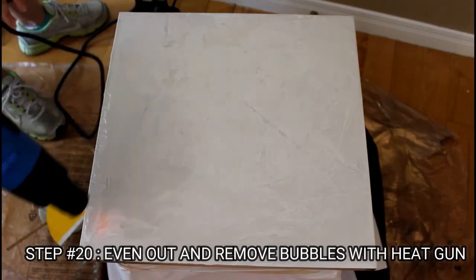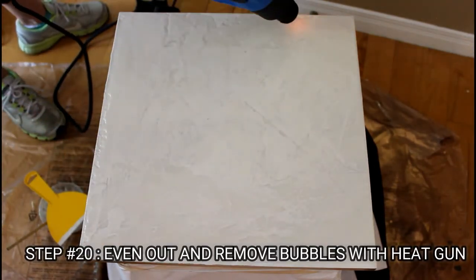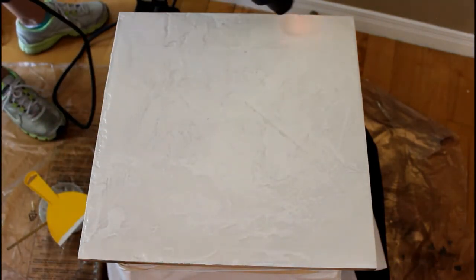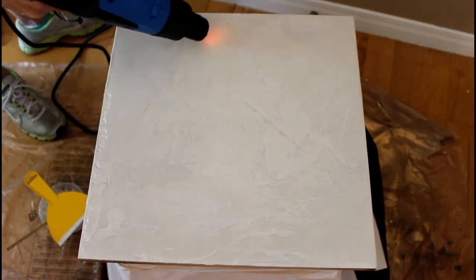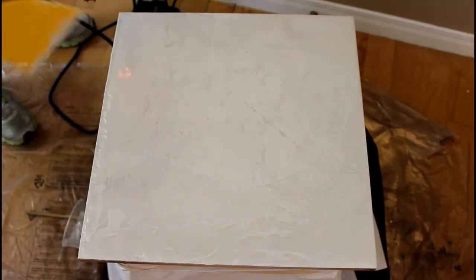We will be using a heat gun to spread all the epoxy more evenly and we can already see that the two different whites are creating a nice depth and dimension on the surface.